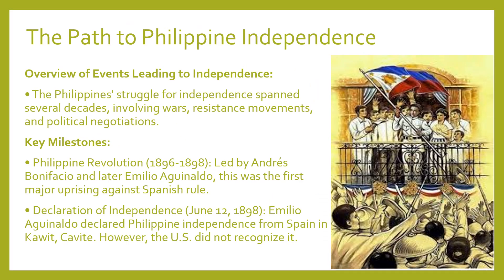To understand how the Philippines gained its independence, we need to look back at the major events that paved the way. It all started with the Philippine Revolution from 1896 to 1898, led by key figures like Andres Bonifacio and later Emilio Aguinaldo. This revolution was the first major uprising against Spanish rule, and it set the stage for what was to come. On June 12, 1898, Emilio Aguinaldo declared Philippine independence from Spain in Kawit, Cavite. It was a huge moment, but there was a catch — the United States didn't recognize this independence, which led into a new chapter of struggle.